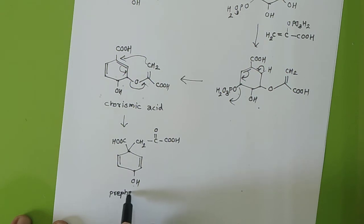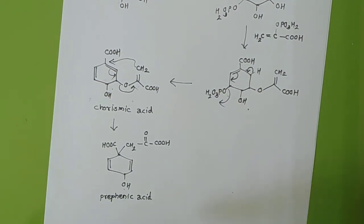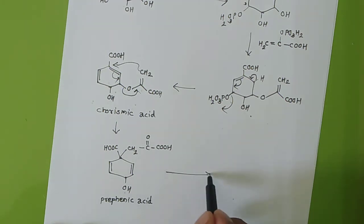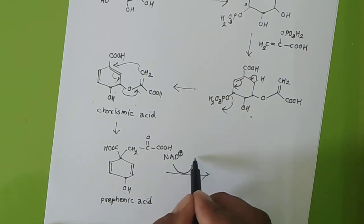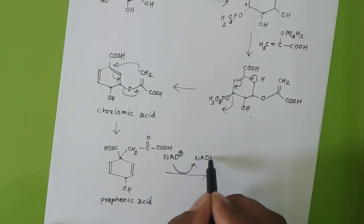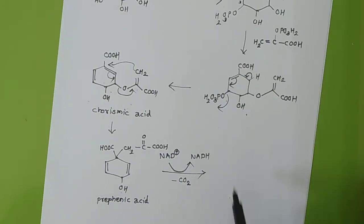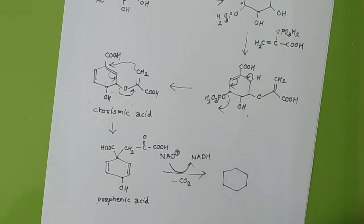Up to here we find that the synthesis is the same as phenylalanine synthesis — up to prephenic acid. Now here we have to add NAD+, which is the oxidizing agent, and you will get NADH. Then there will be loss of CO2, meaning this COOH group will be removed.